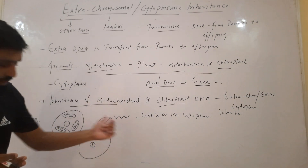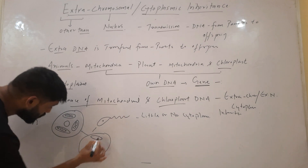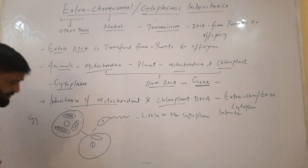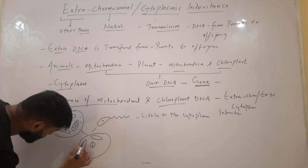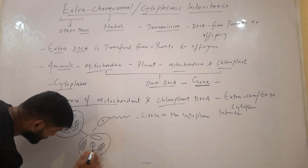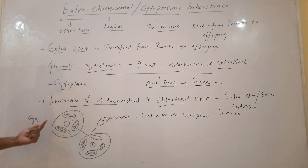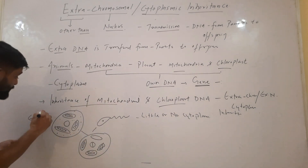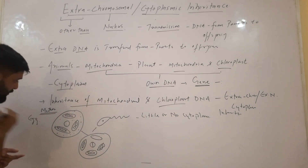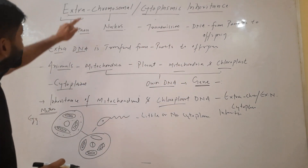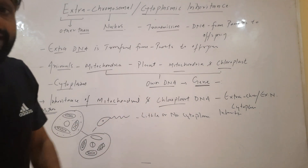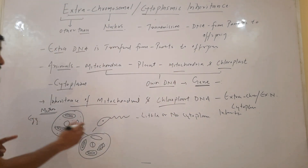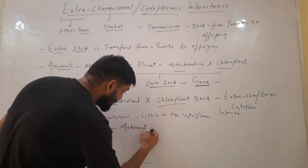So in the case of chromosomal DNA or chromosomal genes, there is a 50-50 split: 50% comes from the mother and 50% comes from the father. But in the case of cytoplasm, almost all the cytoplasm comes from the mother. Therefore, all the mitochondria present in the zygote are transmitted from the mother, and the DNA and genes inside those mitochondria are also transmitted from the mother only. This is called maternal inheritance.